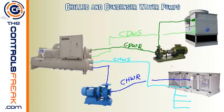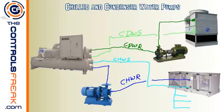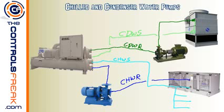A common question is how to tell the difference between supply and return. For chilled water, supply means you're providing chilled water — that comes from the chiller, so the water leaving the chiller is the chilled water supply. For condenser water, the cooling tower is what supplies the cold condenser water to the chiller, so that's the condenser water supply. The hot water leaving the chiller returns to the cooling tower, making it the condenser water return.